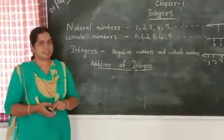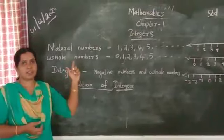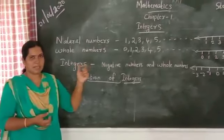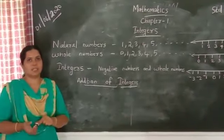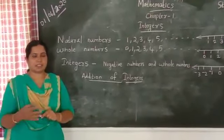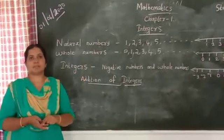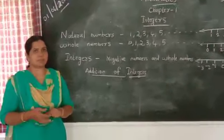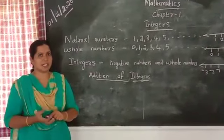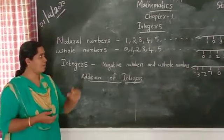Before going to the topic, let us recall what we learned in previous classes. You know that mathematics is the science of quantity. Quantity is always a number. For example, when you are going to a shop, the first question is what do you want. Then you may answer: I want some rice or potatoes. Then the next question is how much quantity do you need? It may be 2 kilograms or 5 kilograms. So quantity is always expressed as numbers.